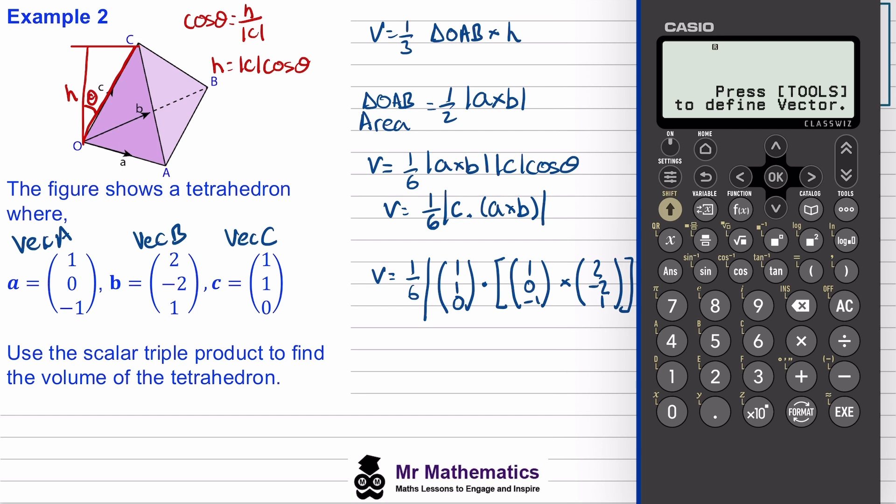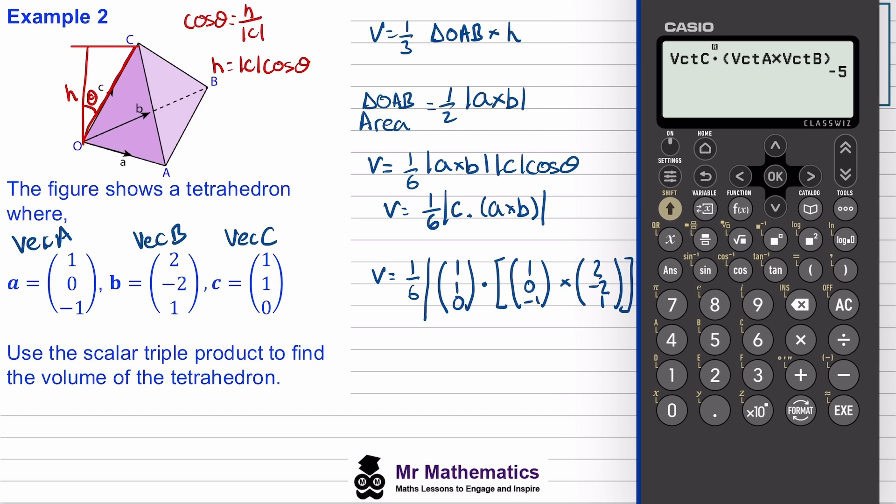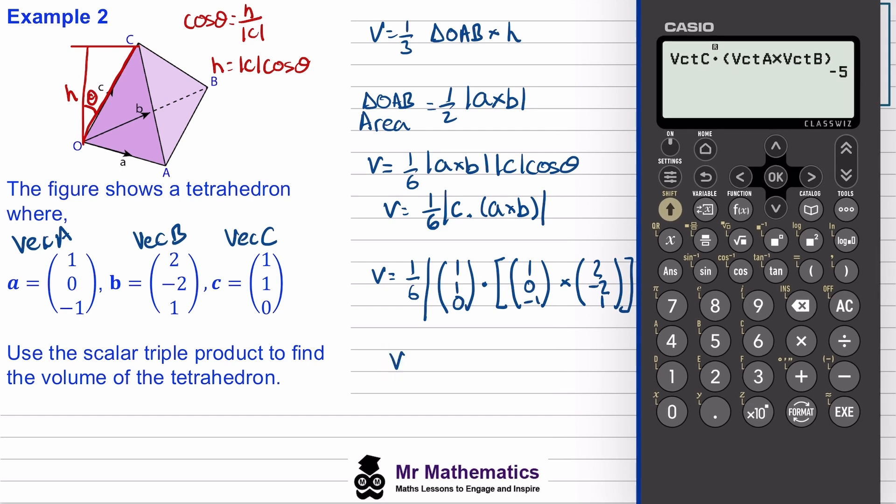And then we can enter in this calculation. We want catalog, vector, vector C, dotted with, so catalog, vector, dot product, opening brackets, vector A crossed with vector B, and then we'll close that bracket. And you can see we get negative five. So the volume will be one sixth of the magnitude of negative five, which becomes five sixths.